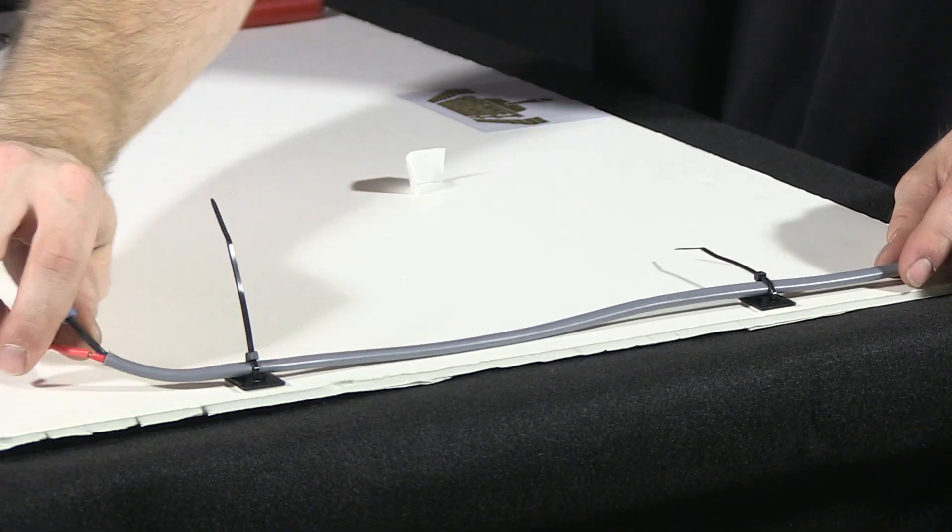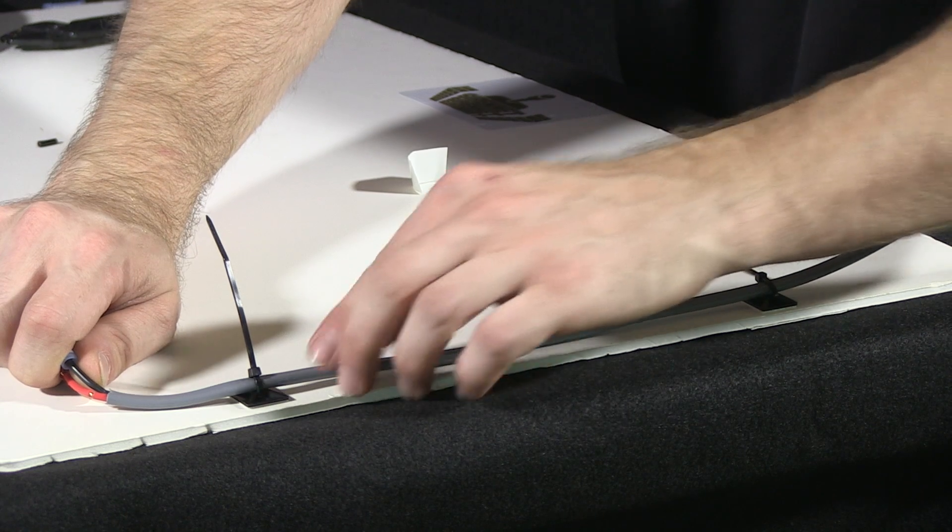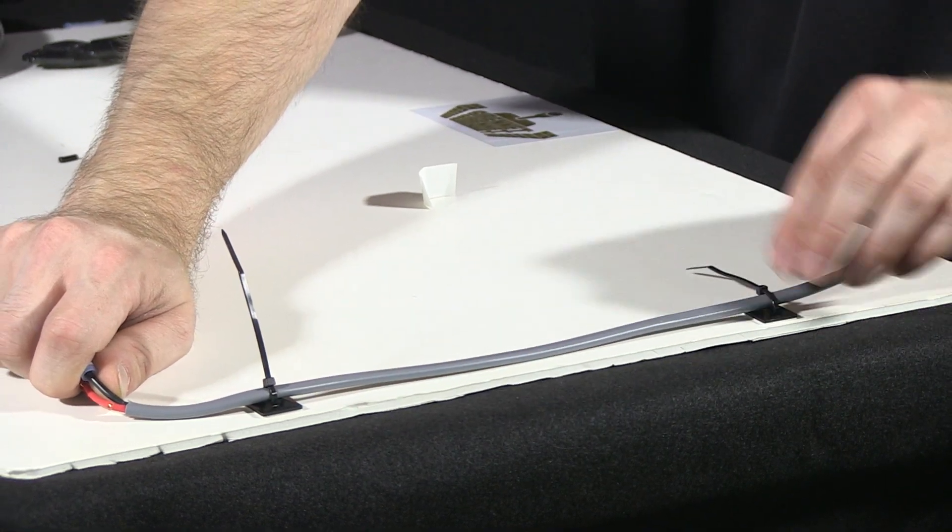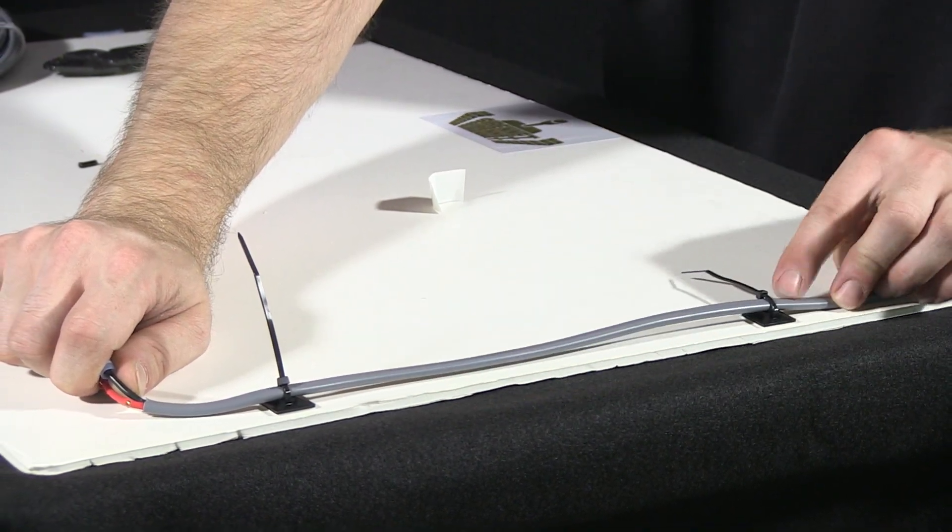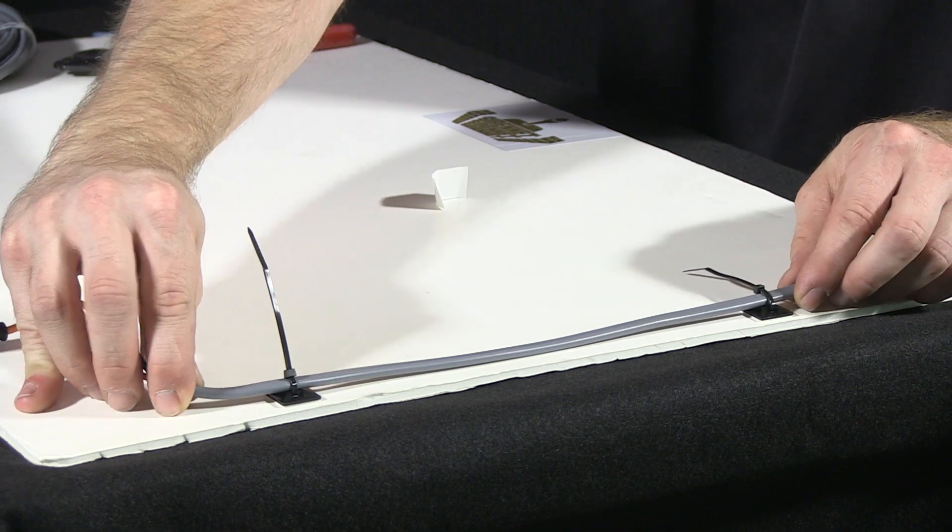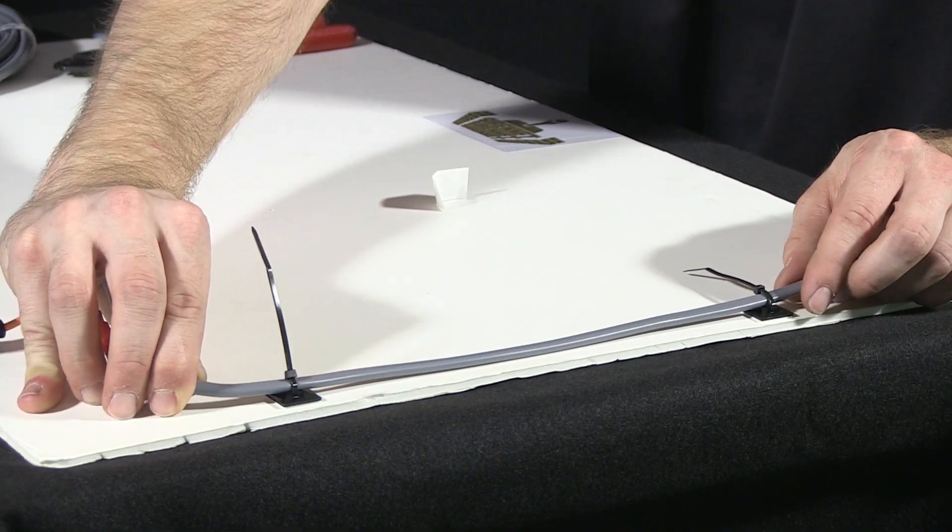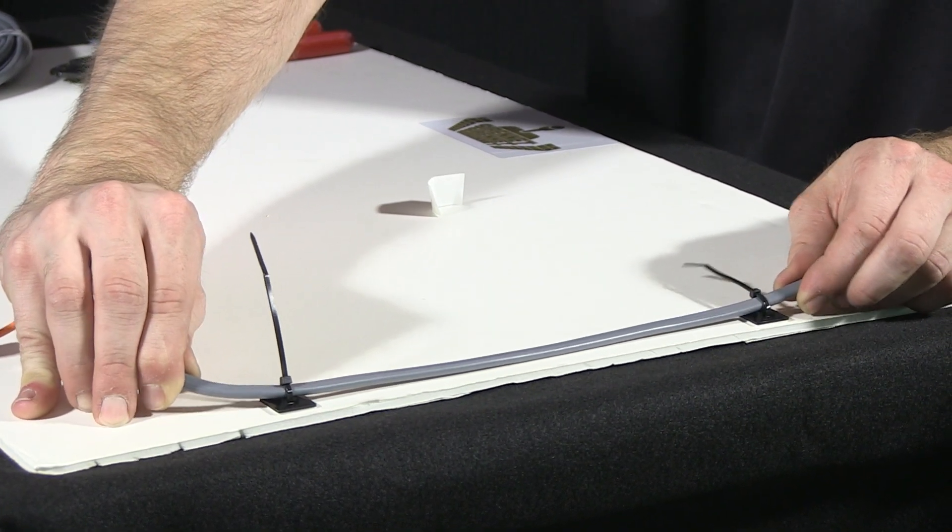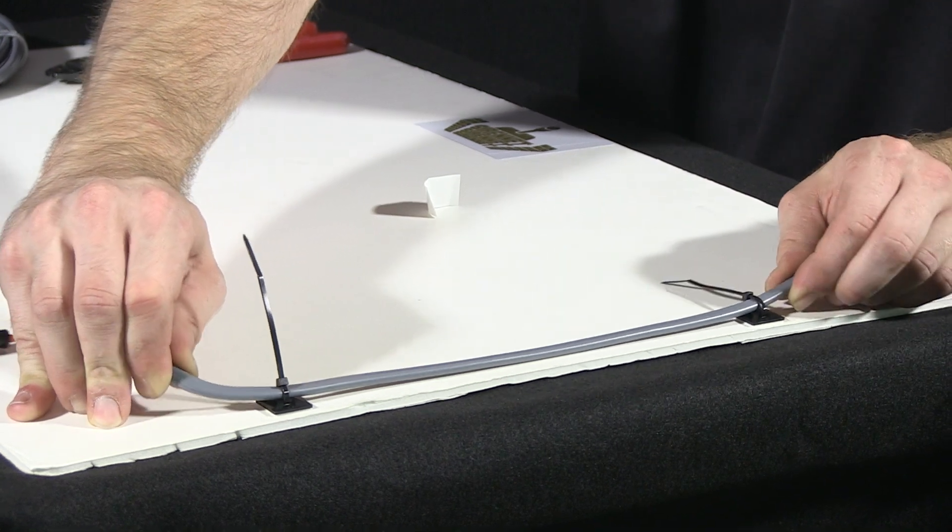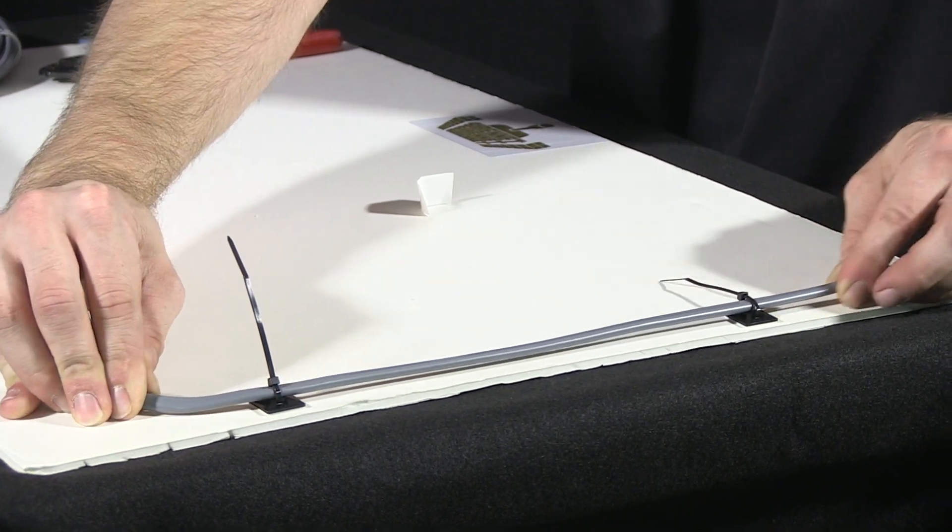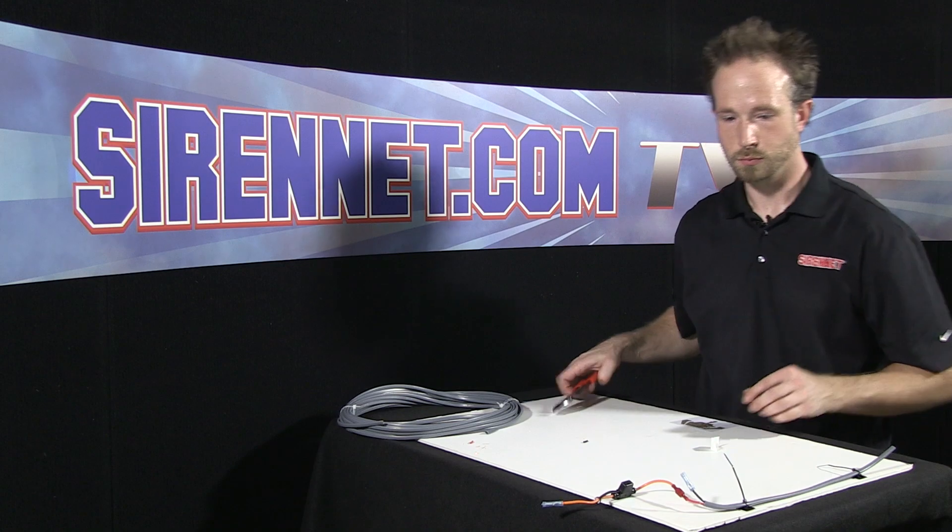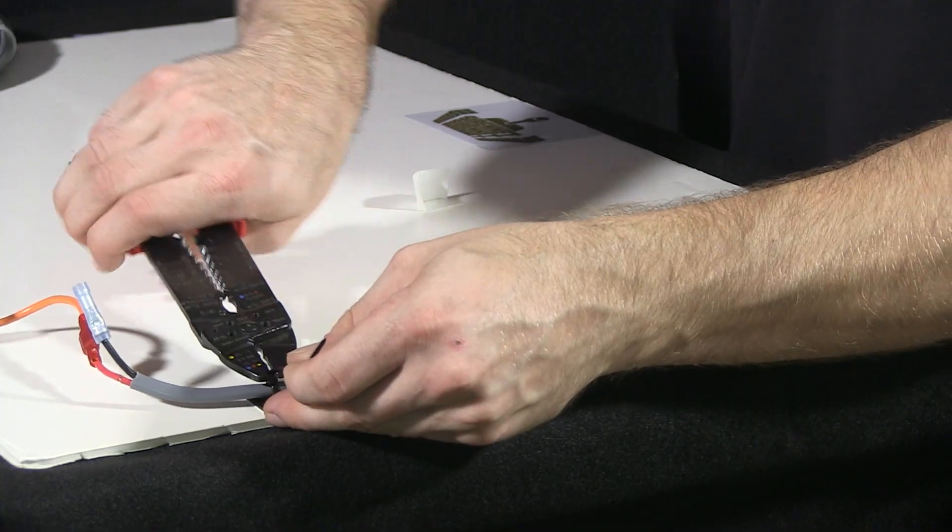As you can see, this has given our harness a nice flat mount against a surface and it won't allow the harness at any point during the installation to come loose, vibrate loose, or become disengaged from the surface that it's affixed to. I'll go ahead and snip off the end of the zip ties here.